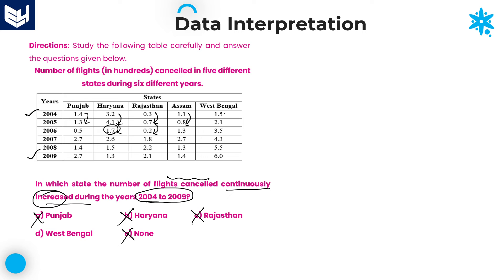Once look at West Bengal. Here values increase: 1.5 to 2.1 increases, 2.1 to 3.5 also increases, 3.5 to 4.3 also increases, 4.3 to 5.5 also increases, and finally 5.5 to 6 also increases. It means from 2004 to 2009, there is a continuous increment in number of flights cancelled — that is for the state of West Bengal. Therefore, the required answer for this question is option D.